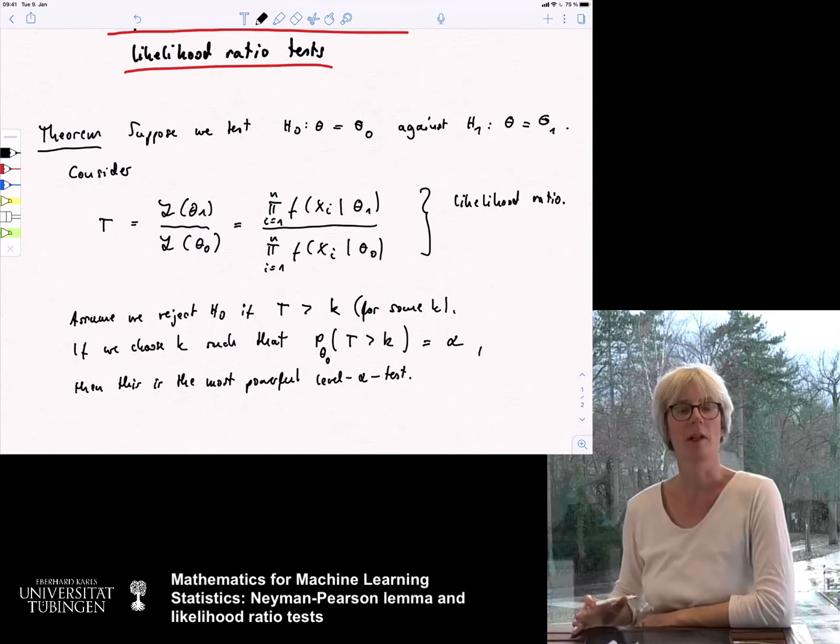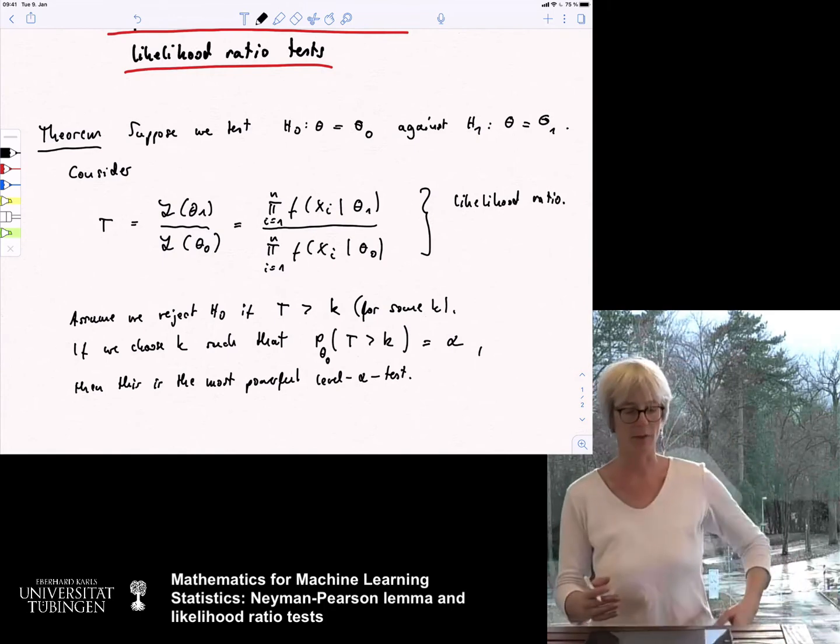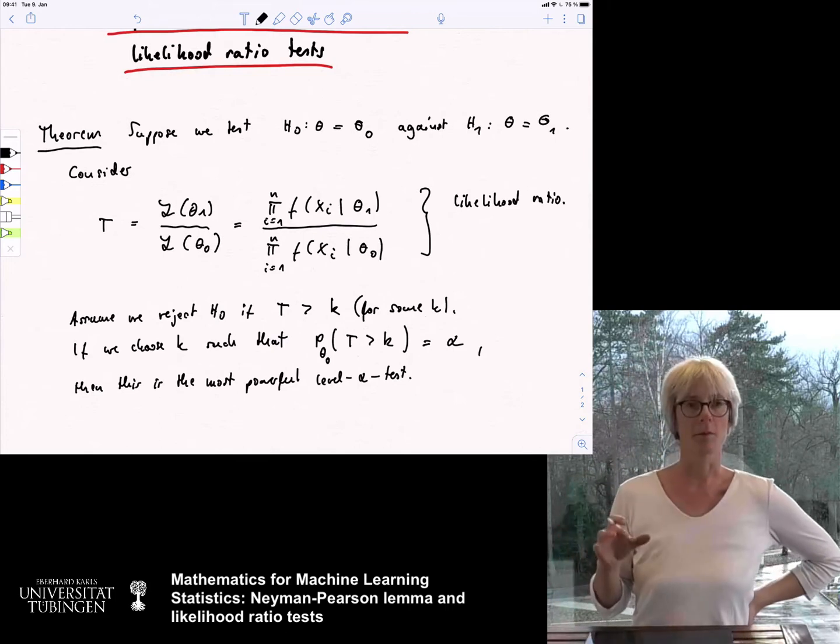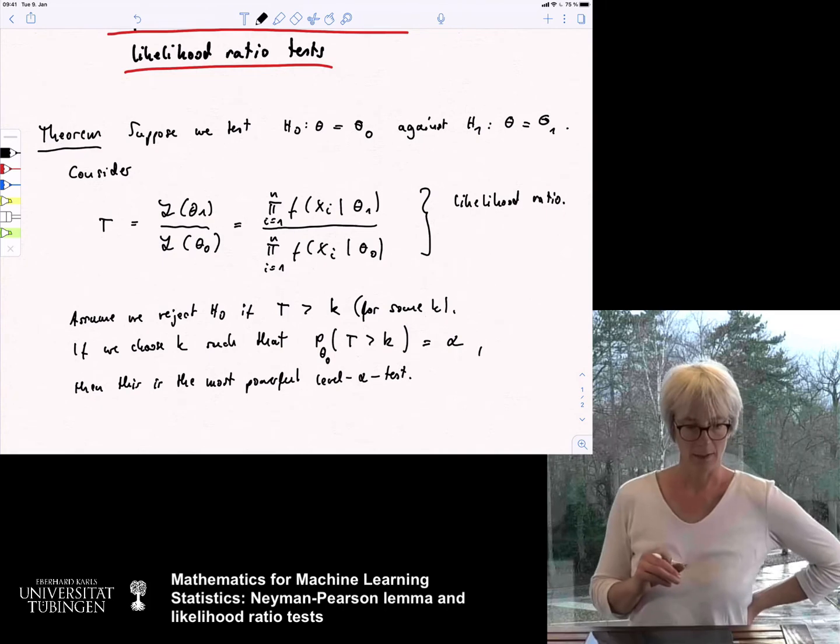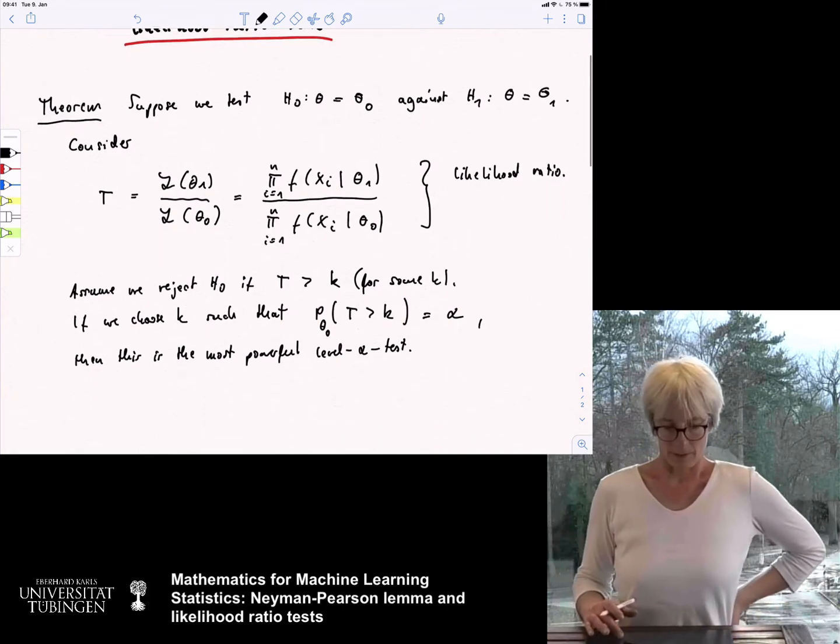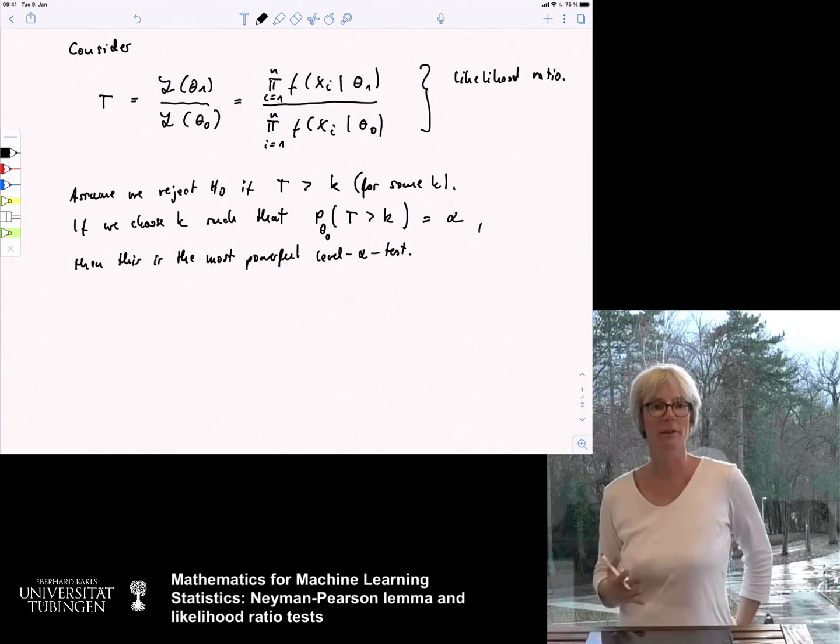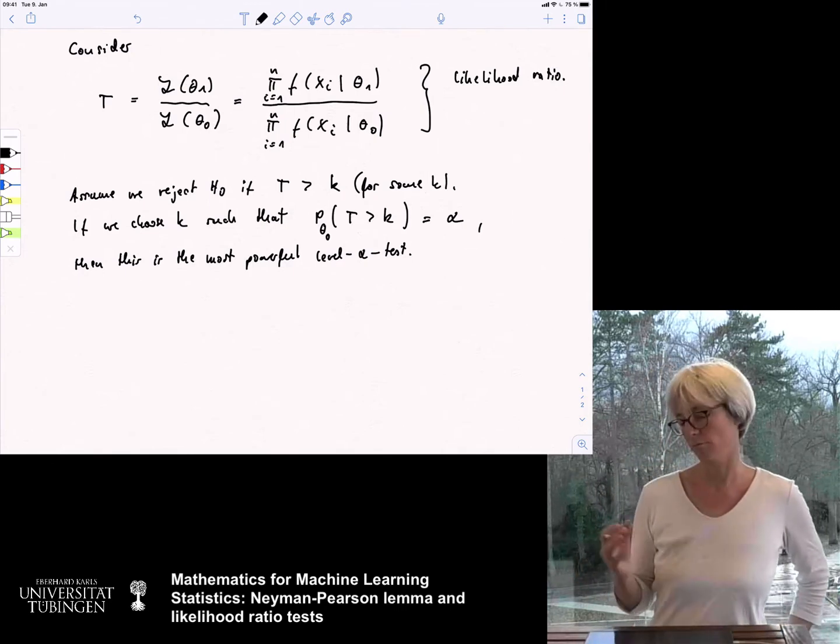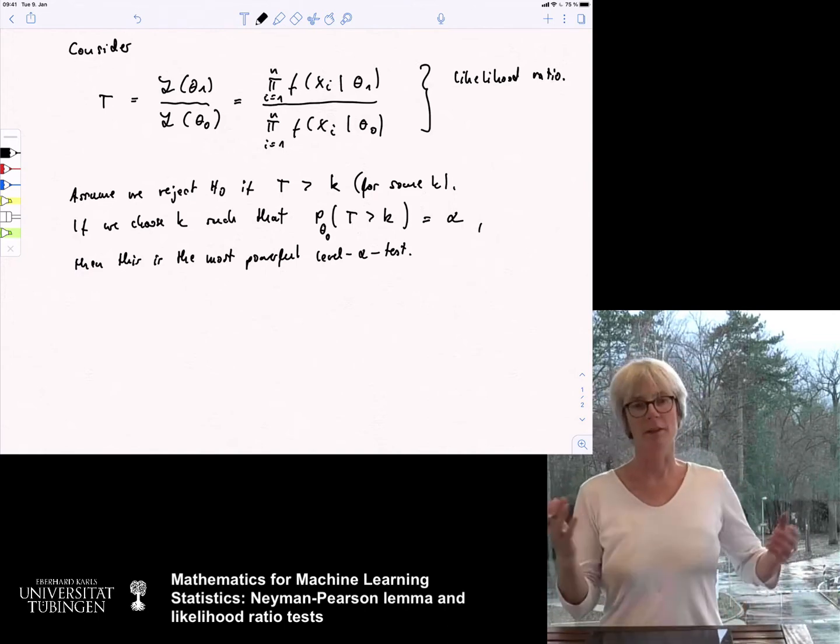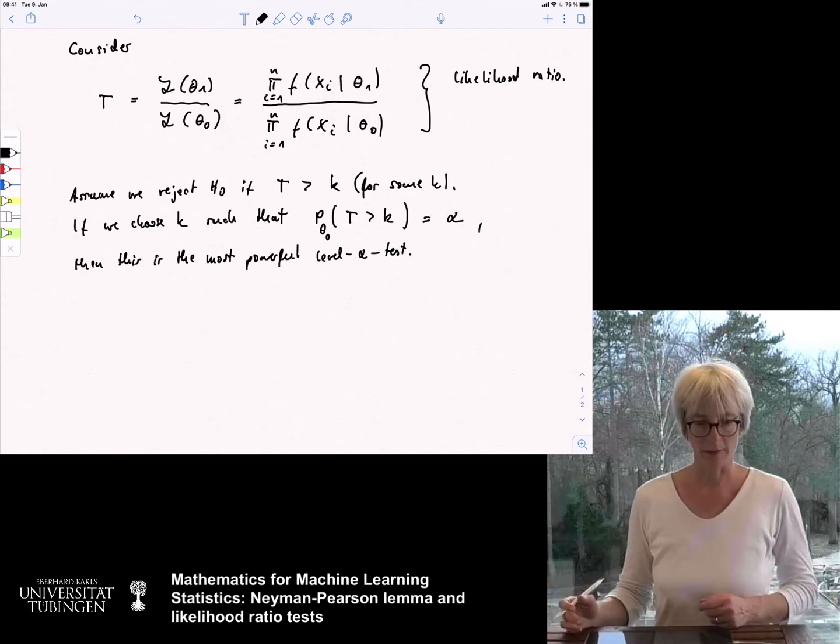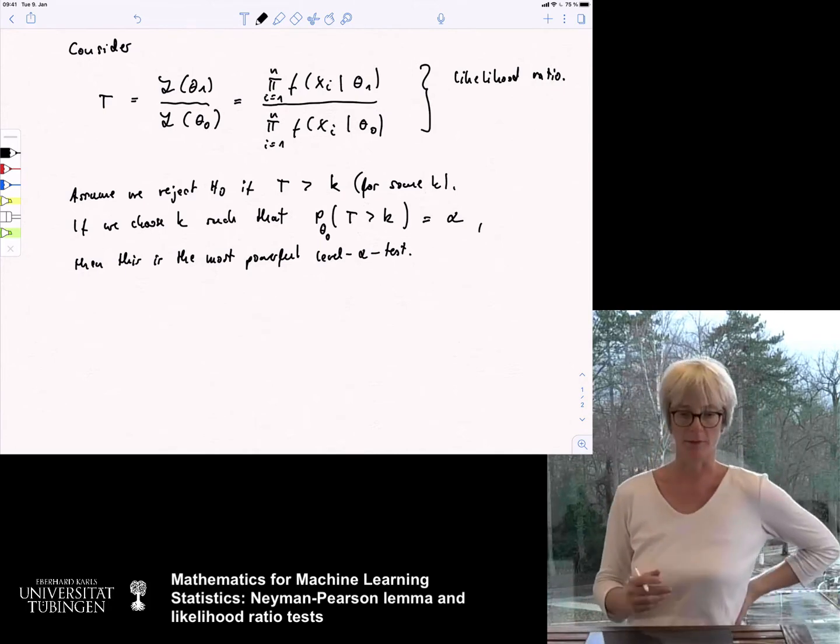So, no matter which level alpha test, we constructed a level alpha test by setting k such that this statement is true. And now, the statement of the theorem is that this leads to the most powerful test. The theorem is, I would say, moderately practical in the sense that often you do not want to test two-point hypotheses against each other. But still, I think it is a very nice and beautiful result.